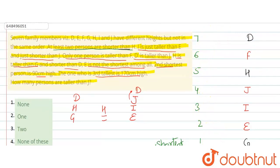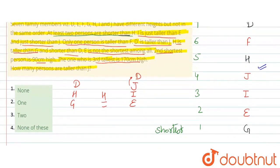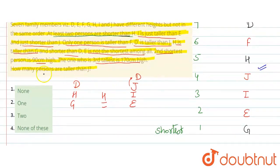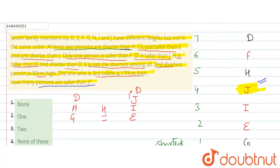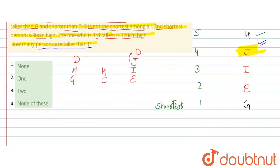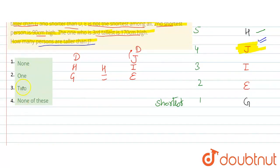To yeh ko rub kar dijiye yeh wrong one hai. To yahan par aapke paas yeh wala jo condition hai yeh saare conditions ko satisfy kar raha hai. To pucha kiya humse how many persons are taller than J. To J aapke paas yahan hai, J se taller kitne log hai. So J se taller 1, 2, 3 persons hai to yahan par aayega aapke paas 3. So 3 option mein nahi hai to yahan par aapka answer aayega Option number 4 None of these is the correct answer. Thank you.